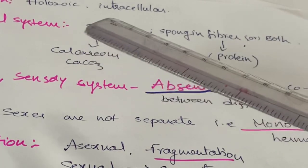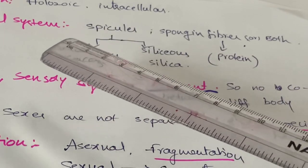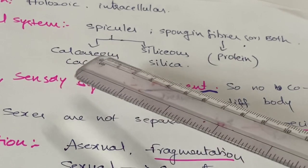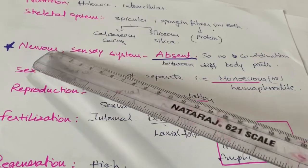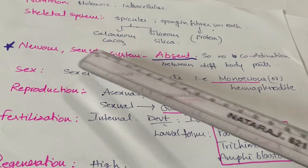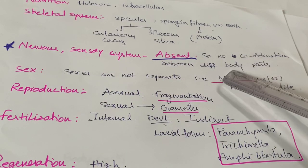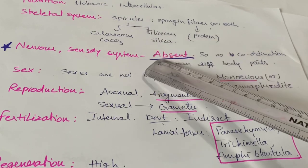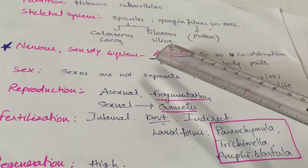Calcareous spicules are made up of calcium carbonate, siliceous spicules are made up of silica, and spongin fibers are made up of protein. In examinations, you may be asked what material calcareous spicules are formed from — the answer is calcium carbonate. Importantly, neurons and sensory cells are absent in Porifera, so coordination between different parts of the body is lacking.